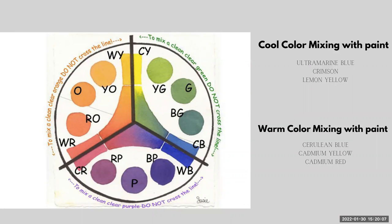Color mixing with paint: when mixing color with paint, you want to think about staying within the cool primaries for a cool color and the warm primaries for a warm color. The cool mixing palette is ultramarine, crimson, or lemon yellow. For a warm color palette, it's cerulean blue, cadmium yellow, and cadmium red. These are very traditional paint color tubes that you can find when mixing acrylic, watercolor, or even gouache.